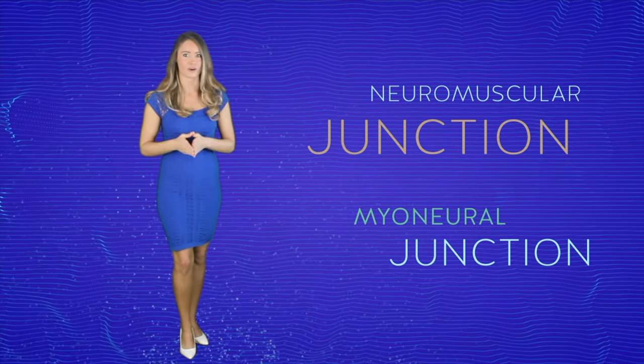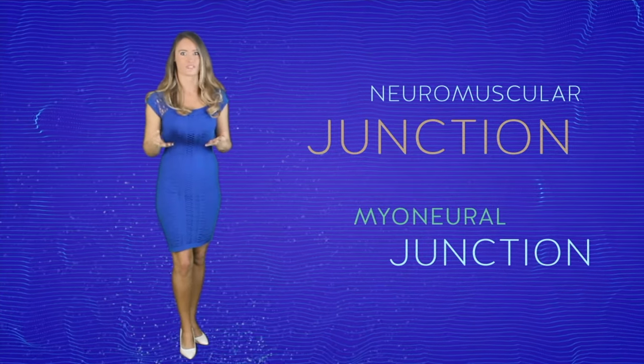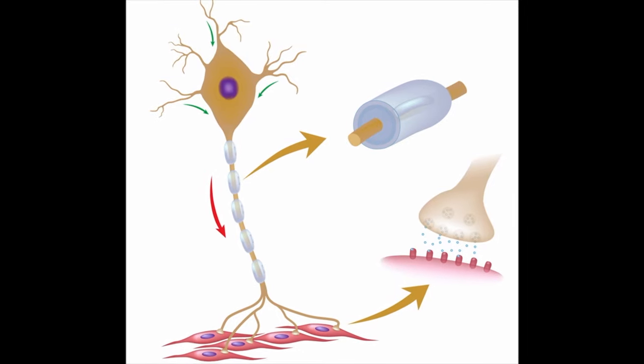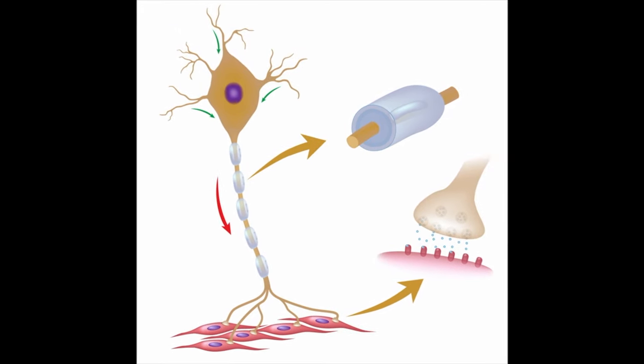Before anything else, let's clarify that when we say neurons, we are talking about nerve cells. Only that neurons are specific to the central nervous system, particularly in the brain and spinal cord. Now back on track.